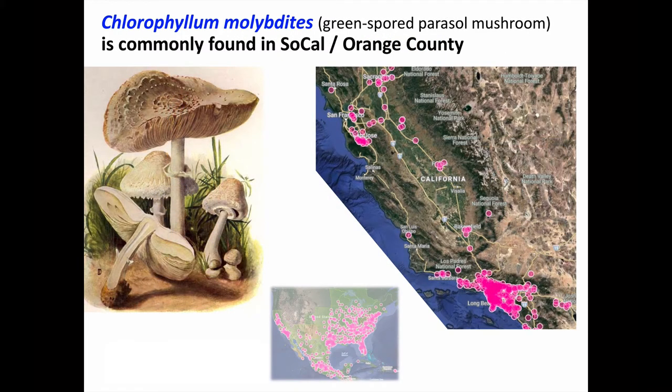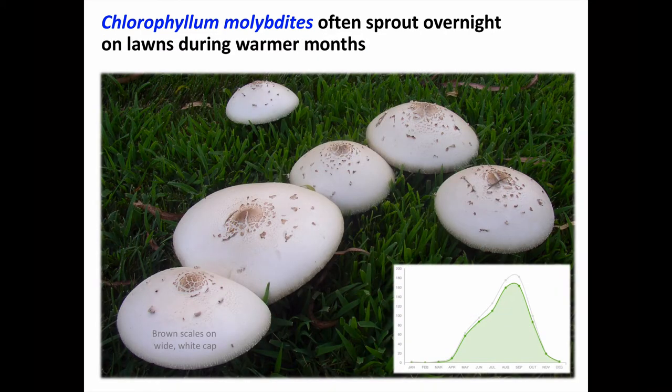Here we see the most common identifiable GI irritant mushroom: Chlorophyllum molybdites, the green-spored parasol mushroom. It is found over most of the United States and is particularly common in Orange County, where it is often found sprouting on lawns. Mushrooms are fruiting bodies that grow from mycelial shoots, creating and releasing spores similar to the flowers of plants. Chlorophyllum molybdites often sprout up rapidly overnight on lawns during the warmer months, with peak incidence in August through September.